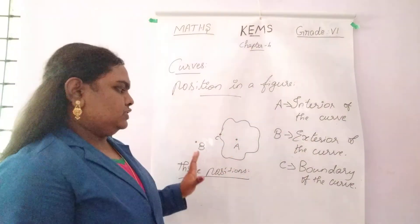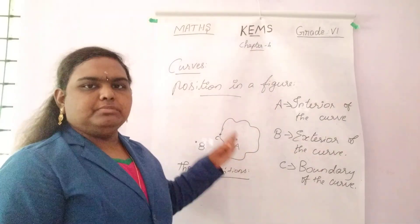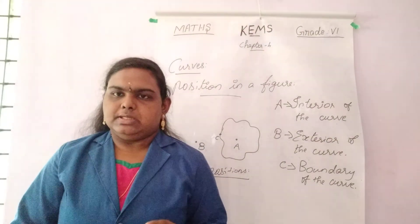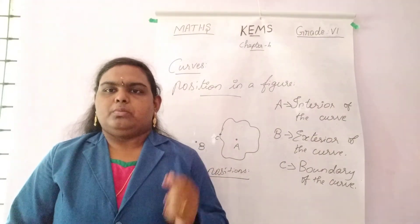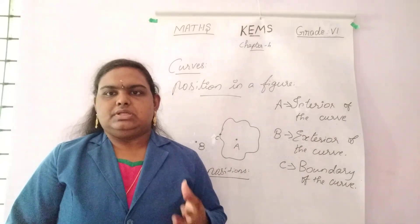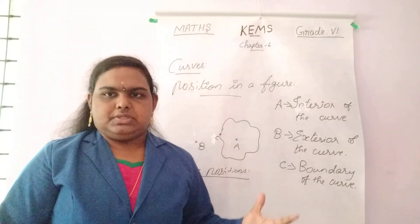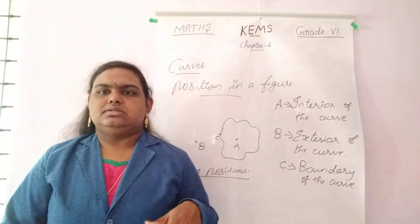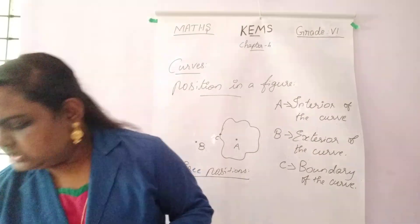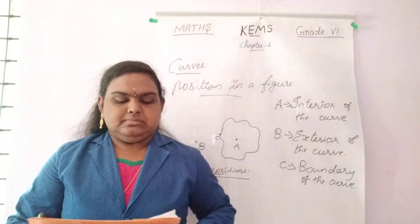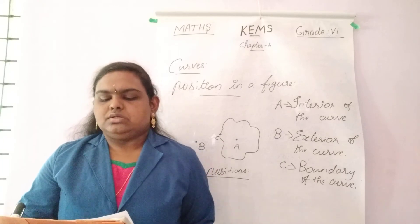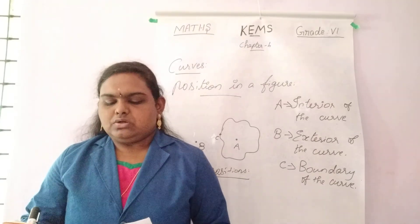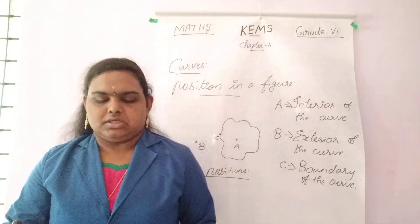In a figure I am taking the three positions: A is inside, B is outside, and C is on the curve. Simple curve — if a curve does not cross itself, it is called a simple curve. That is the definition.